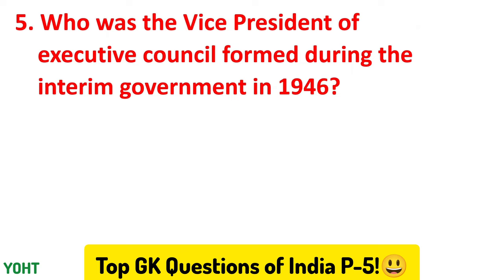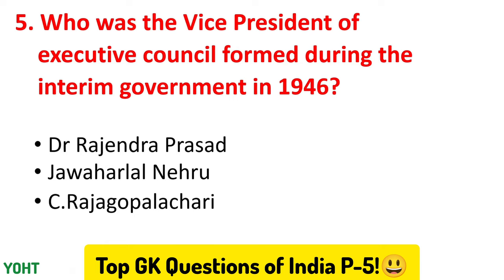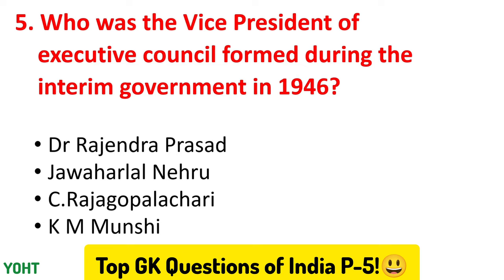Let us see the fifth question. Who was the vice president of the executive council formed during the interim government in 1946? The options are Dr. Rajendra Prasad, Jawaharlal Nehru, Ratsi Raja Kupalachari, and K.M. Munshi. The correct answer to this question is Jawaharlal Nehru.